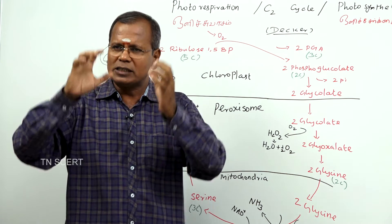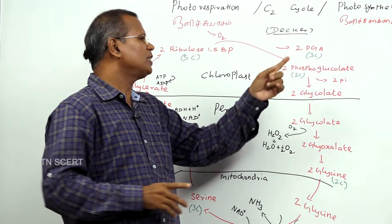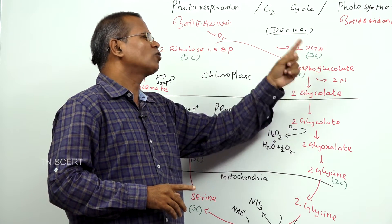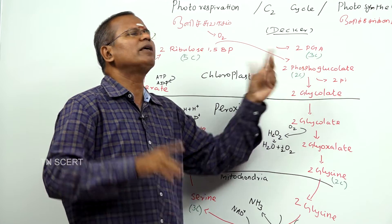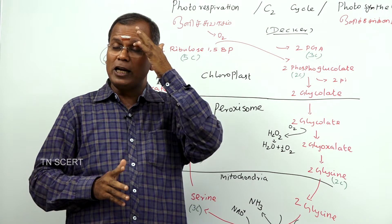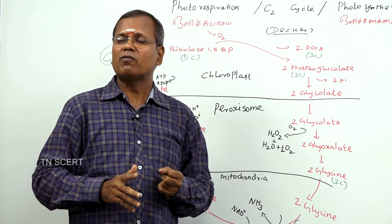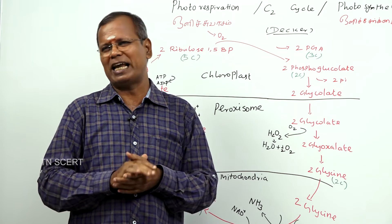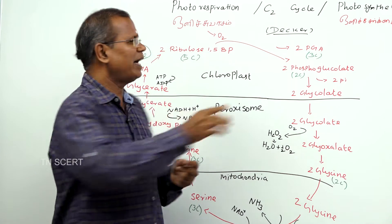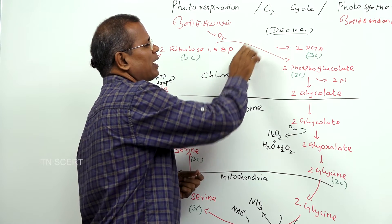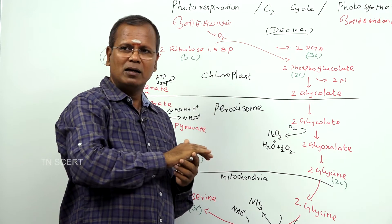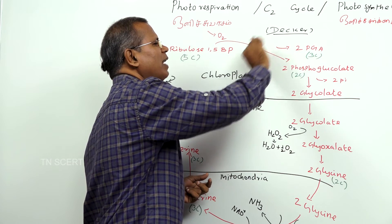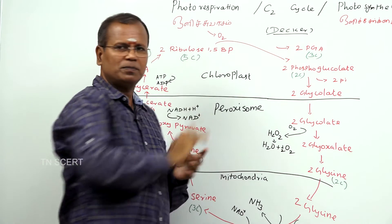The first stable chemical formed in this process, phosphoglycolate, is a 2-carbon compound, so the cycle is called the C2 cycle. In this process, the enzyme Rubisco (RuBP carboxylase) participates.